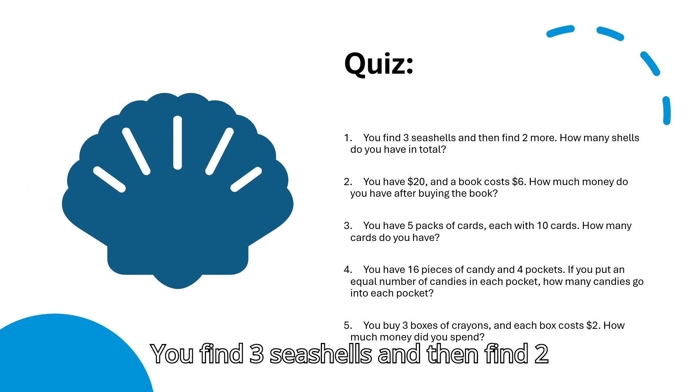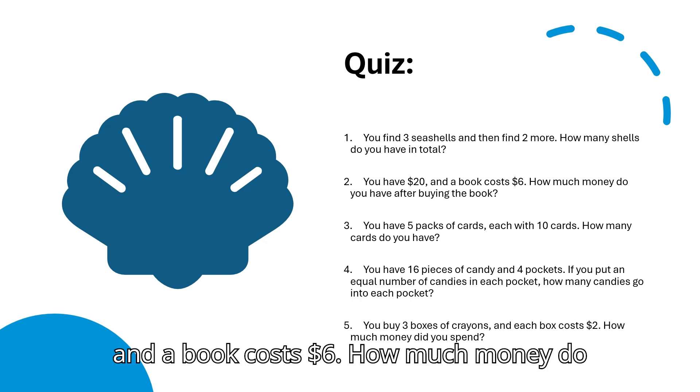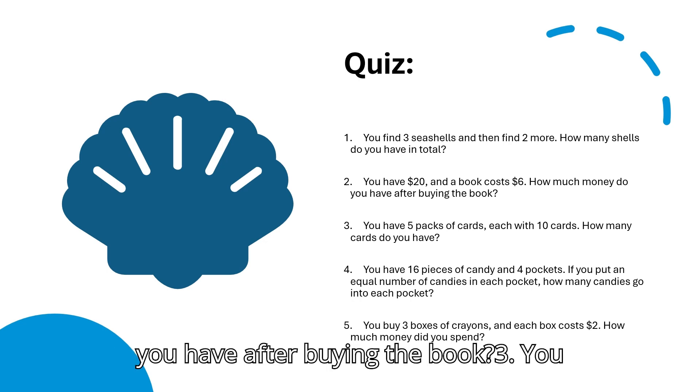Question 1: You find 3 seashells and then find 2 more. How many shells do you have in total? Question 2: You have 20 dollars, and a book costs 6 dollars. How much money do you have after buying the book? Question 3: You have 5 packs of cards, each with 10 cards. How many cards do you have?